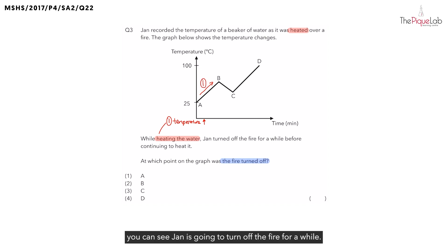Afterwards, you can see Jen is going to turn off the fire for a while. When Jen turns off the fire, is there still a heat source? No, which means will the temperature of the water continue to increase, or will it start to decrease? We know that the temperature should start to decrease. Which parts of the graph show you a decrease in temperature? We can see it's from B to C.